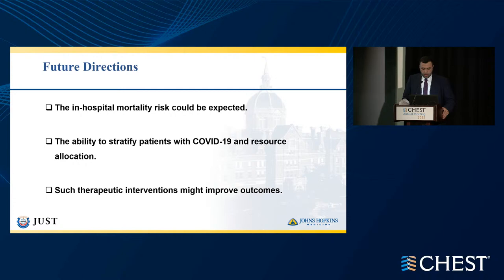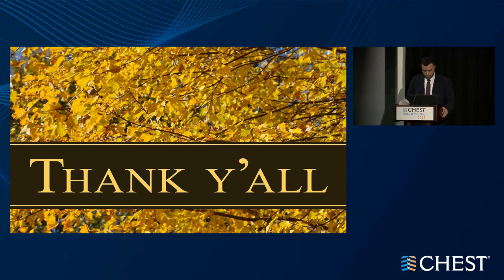We can conclude that in-hospital mortality risk could be predicted based on the clinical parameters of hospitalized COVID-19 patients. These reported risk factors could be used to stratify patients with COVID-19 and guide resource allocation. Also, therapeutic regimens such as triple therapy — tocilizumab, remdesivir, and dexamethasone — may improve outcomes. Thank you all.